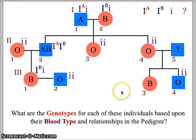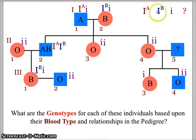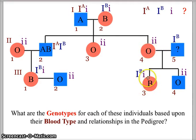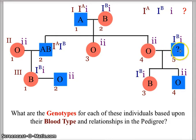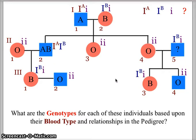Coming over to generation three, individual three, we know she can only get a little i from her mom. She has B type blood so she has to get a B allele, and that B allele has to come from her dad. This relationship generated a daughter with B blood but a son with O blood. One of the i's came from the mother, but the second little i has to come from the father. So the father — generation two, individual five — has to have B type blood and is heterozygous for B, because he gives a B to his daughter and the lowercase i to his son.